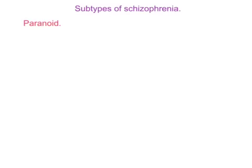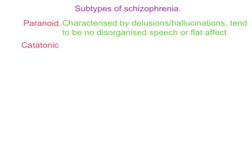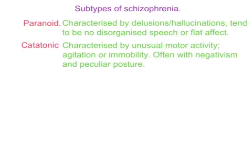Subtypes of schizophrenia. Paranoid schizophrenia is characterised by delusions, particularly of persecution, and hallucinations. However, symptoms such as disorganised speech and flat affect are usually absent. Catatonic schizophrenia is characterised by unusual motor activity — either marked agitation or complete immobility — and is often accompanied by extreme negativism and peculiar posturing, although this disorder is very rare.